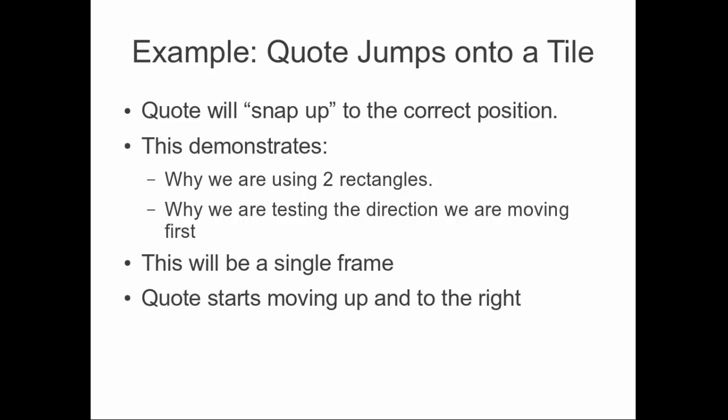Just to remember: we are constantly being pulled down by gravity and constantly have a positive velocity Y — unless we're jumping. The next example is a bit more complicated: Quote jumping onto a tile. This will show our snapping-up mechanic, how it offers the player forgiveness, why we're using two rectangles, and why we test in the direction we're moving first. This is again a single frame — the player only sees the very beginning and the very end.